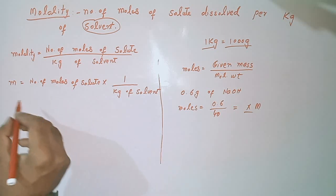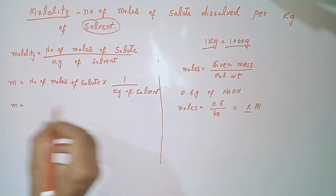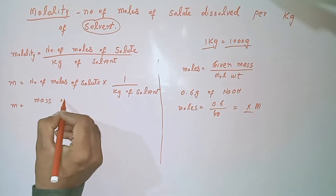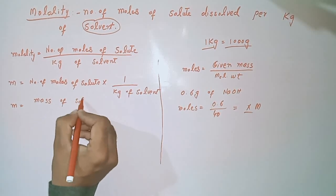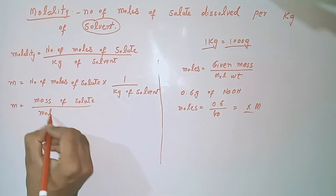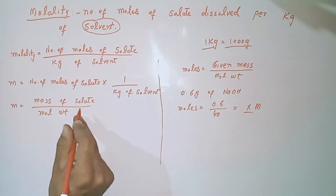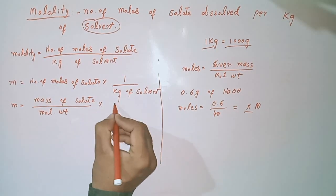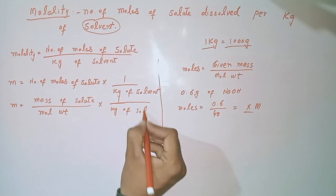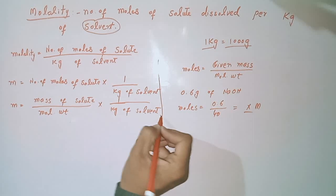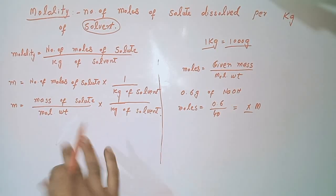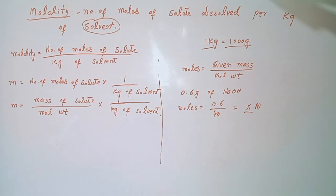We write: m equals number of moles of solute, which equals given mass divided by molecular weight, multiplied by one over kg of solvent. We will use this formula for making a molal solution.